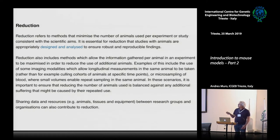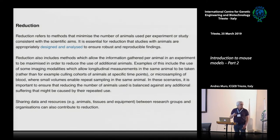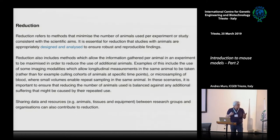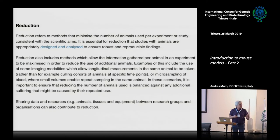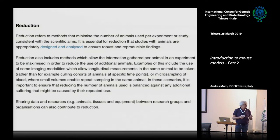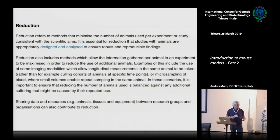For example, if there is a technique where you can do micro-sampling of blood, use it. This will allow you to get some blood from the animal while the animal is still alive, and you can analyze the same animal at a later time point. If you don't use this type of technique, you may have to kill the animal to get a large enough blood volume because your approach lacks sufficient sensitivity.